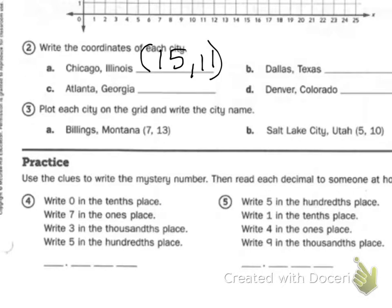Do Dallas, Texas, Atlanta, Georgia, Denver, Colorado together. Next, it says to plot each city on the grid and write the city name.